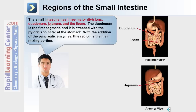This anterior and posterior view of the abdominal cavity reveals the location of the small intestine. In the posterior view you can see the duodenum where it connects to the stomach. In the anterior view is the second portion, the jejunum, and in the posterior view is the ileum, where it connects to the cecum and large intestine.